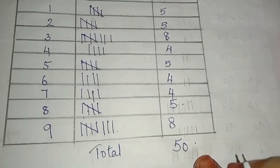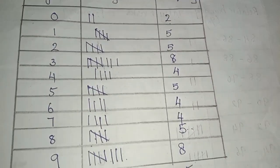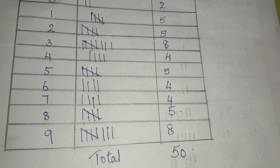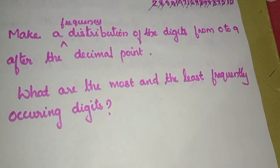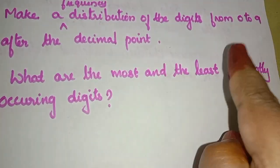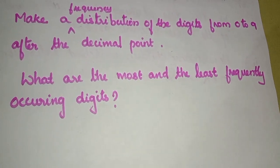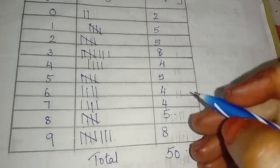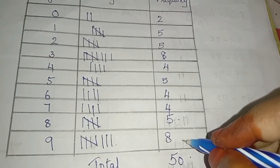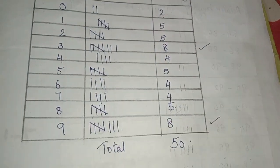Total is 50 — correct. Now we have the correct total of 50. Now we have to talk about what are the most and the least frequently occurring digits. When we look at the highest frequency — the least means the one with the lowest frequency. So 3 or 9 are coming from the highest.